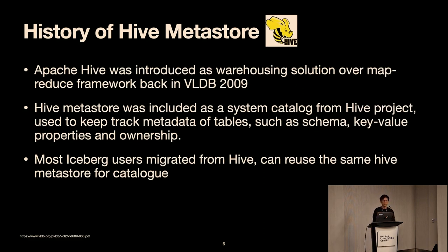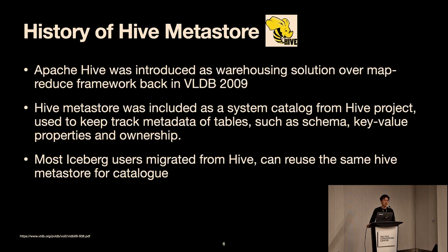Hive was introduced in 2009 by Facebook's infrastructure team to provide a warehousing solution over MapReduce. Data in Hive was modeled by tables, partitions, and buckets, with the Hive Metastore as a system catalog to bookkeep all relevant metadata. Many current Iceberg users have a background in Hive and transitioned their tables to Iceberg format — one benefit is that a single catalog can serve both Hive and Iceberg tables, so metadata doesn't need to change.